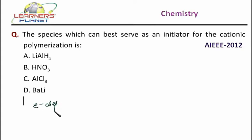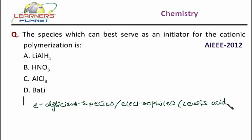So electron deficient species or what are they also called as? Electrophiles, that is electron loving agents or the Lewis acids. Or it can be any cation. So any of these can initiate a cationic polymerization.